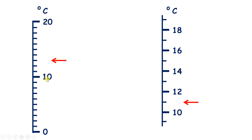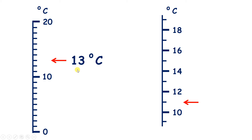Now what's the temperature here? Well, each of these little markings stands for 1 degree, because if we count up — 1, 2, 3, 4, 5, 6, 7, 8, 9, 10 — we get to 10. And then if we carry on counting: 11, 12, 13 — and that takes us to our arrow, so here we have 13 degrees Celsius.